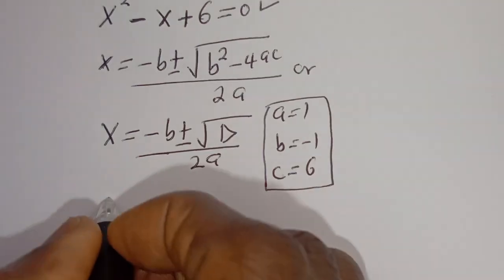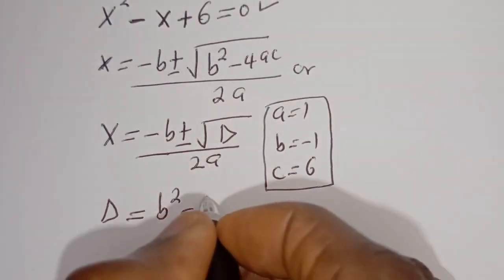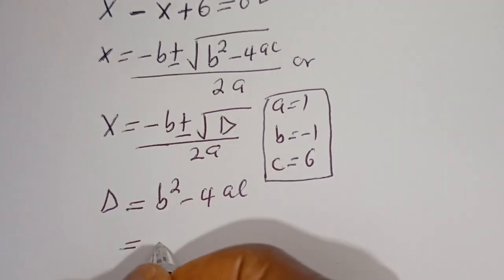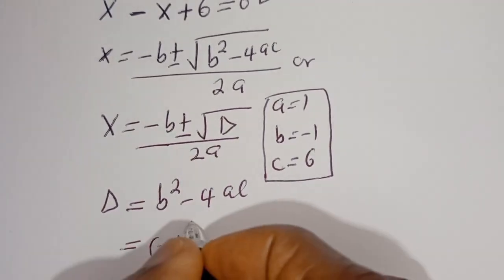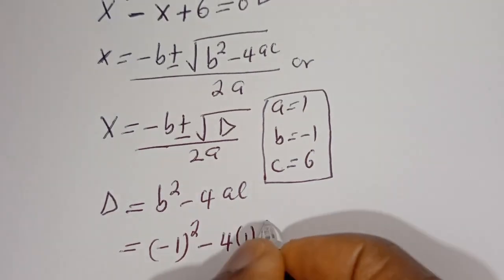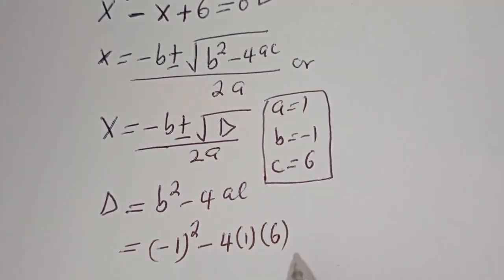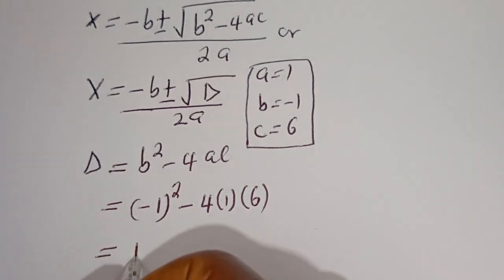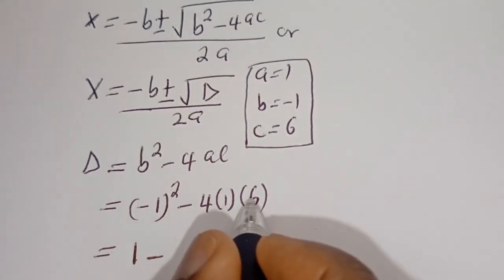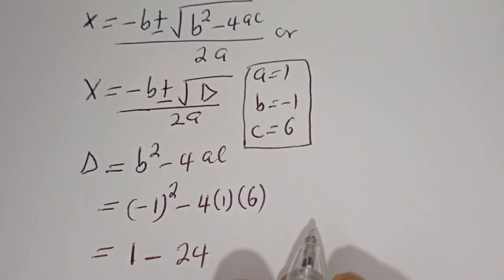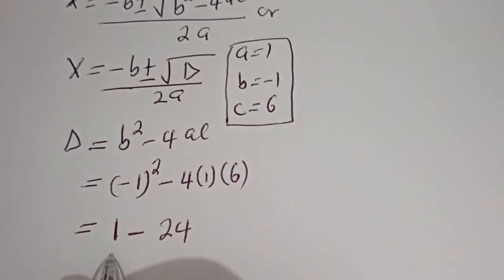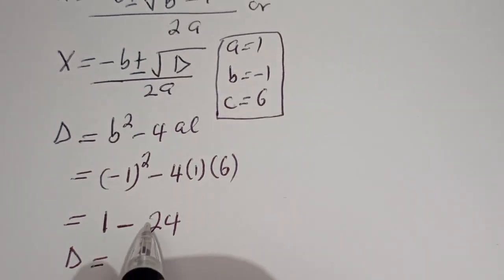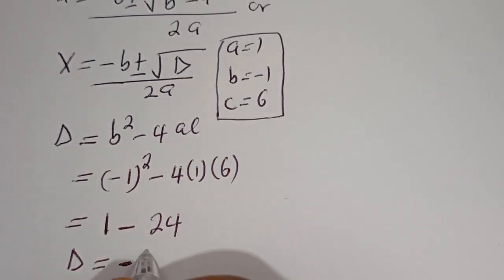Now the discriminant D is equal to B squared minus 4AC. This is equal to minus 1 squared minus 4 multiplied by 1 multiplied by 6. This is equal to 1 minus 4 times 1 times 6, that is 24. Then D is equal to 1 minus 24, that is minus 23.